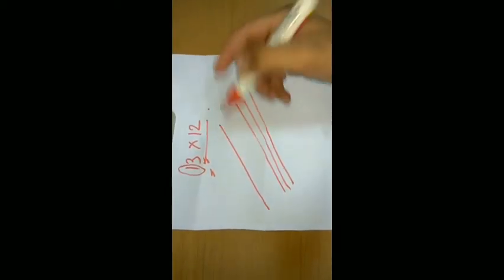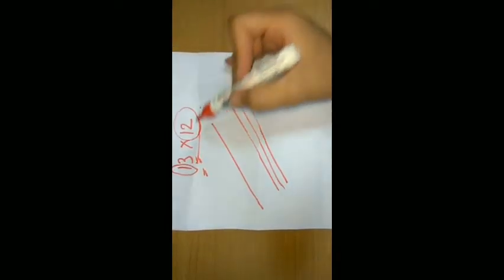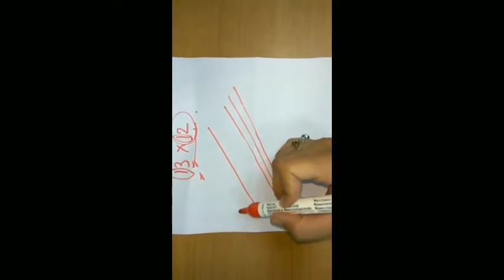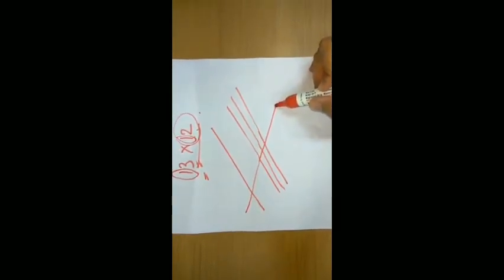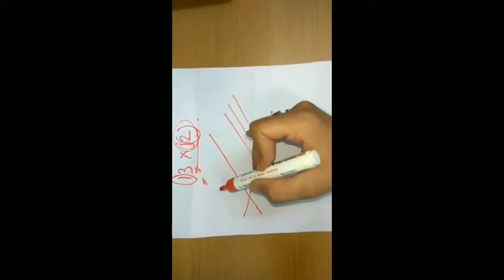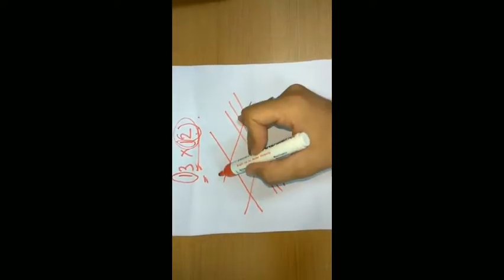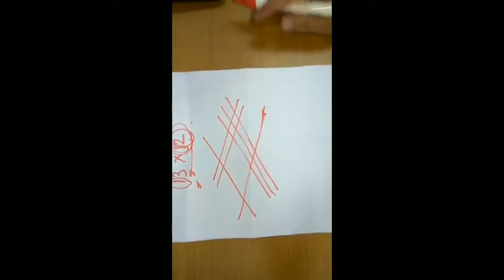Now we have to take the second number, the first digit that is 1. So you have to cross this line like this. Now the second digit, that is 2. So you have to draw two lines parallel to this first line of the second number.